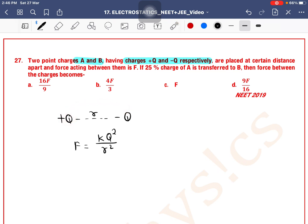This is 25%, so charge A becomes 3Q/4. And for charge B, 25% is transferred, so Q/4 is added. Both are separated by distance r.